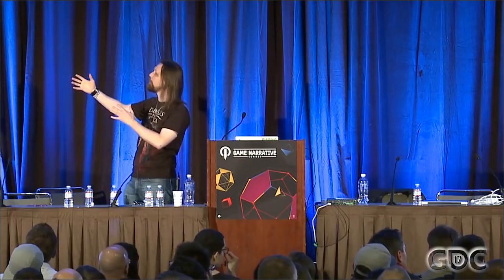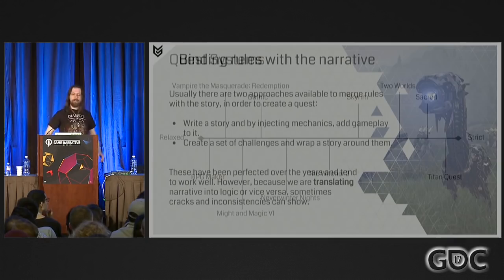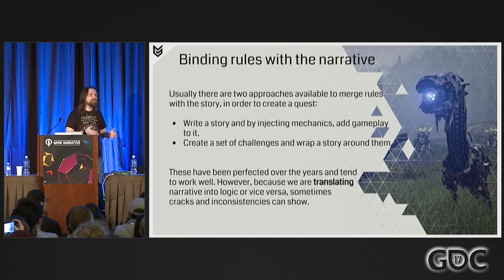The other thing worth looking at is how we actually merge rules with narrative to create quests. There are two approaches that seem obvious: first, write a story and then inject mechanics, rules, and challenges to add gameplay; or the other way around — first create challenges, rules, and mechanics, then wrap a story around them. These two methods have been used pretty much ever since we started building narrative-based games and have been perfected over the years. However, because we are translating narrative into logic or vice versa, sometimes cracks and inconsistencies can show — a dissonance between the rules and the narrative.